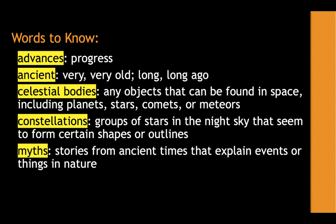An example of this is: last summer my dad showed me how to find different constellations in the night sky. Myths are stories from ancient times that explain events or things in nature. An example of this is: in ancient times some people told myths about a Sun God who ruled over the world. Let's begin to read our story.